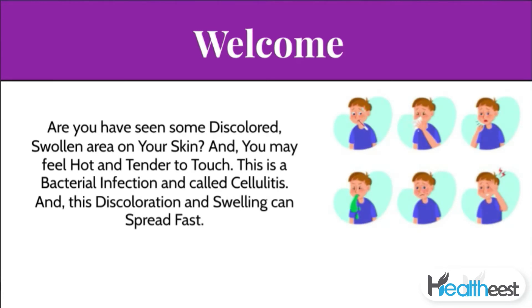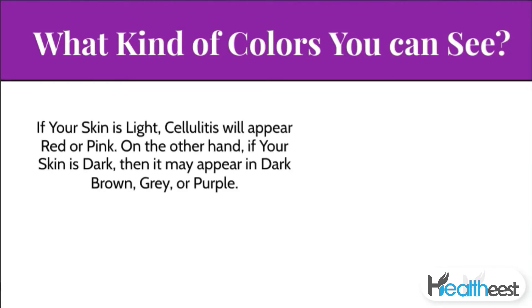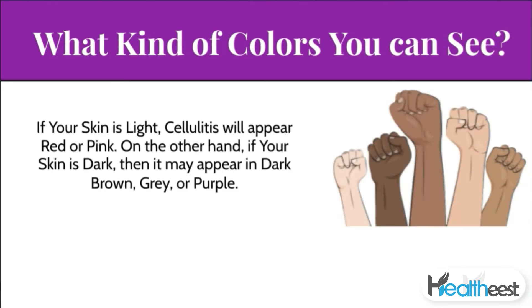Welcome. If you have seen some discolored, swollen area on your skin and you may feel hot and tender to touch, this is a bacterial infection called cellulitis. This discoloration and swelling can spread fast. What kind of colors can you see? If your skin is light, cellulitis will appear red or pink.